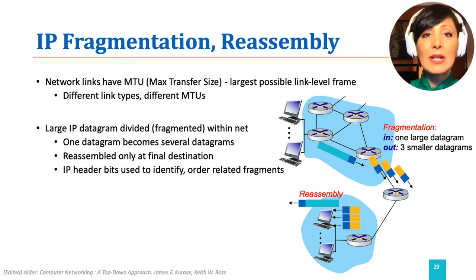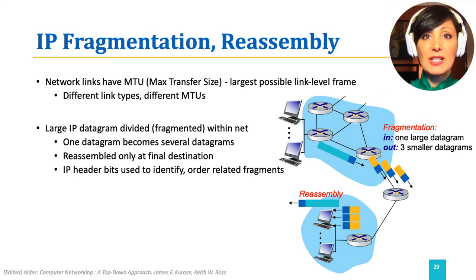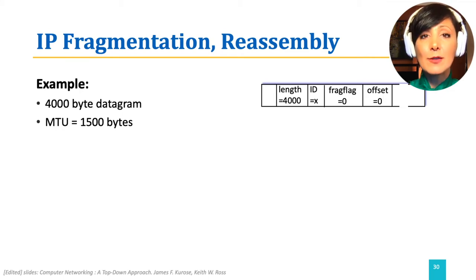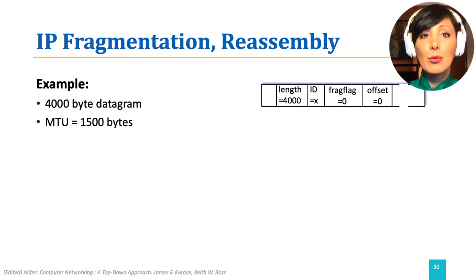The fragmentation and reassembly bits of the IP datagram header will be used in these situations. For example, if we have a datagram of size 4000 bytes and the MTU is 1500 bytes, the datagram will be divided into three smaller datagrams fitting within the MTU.